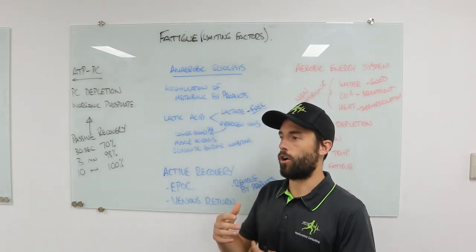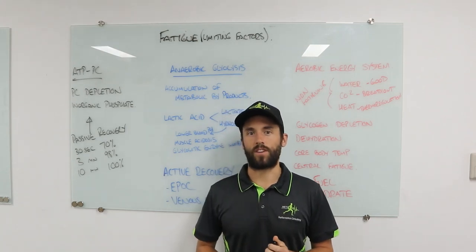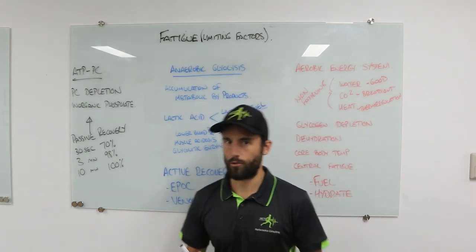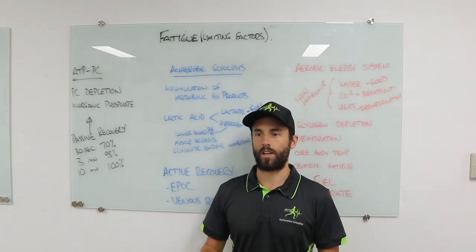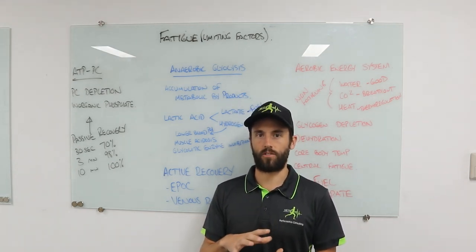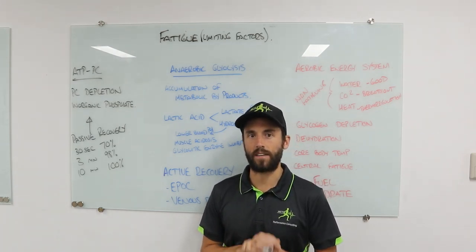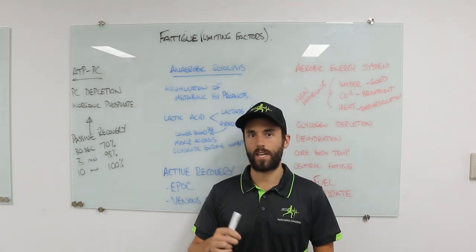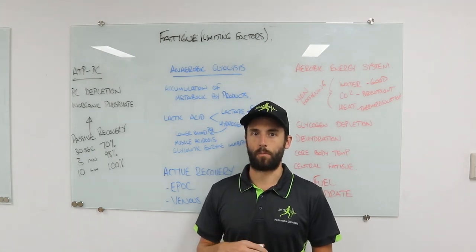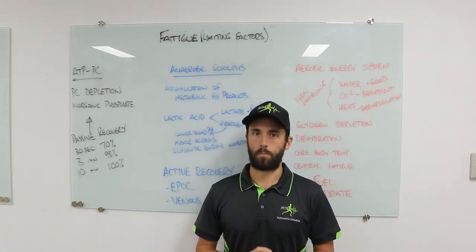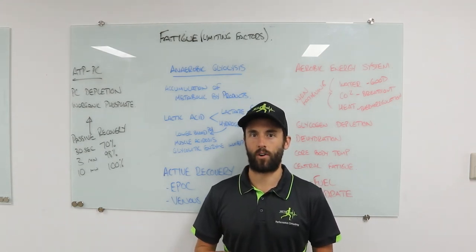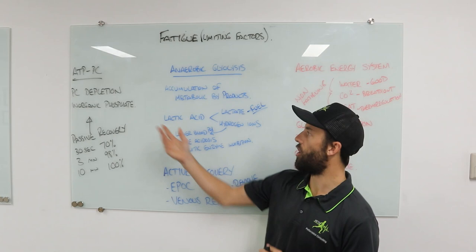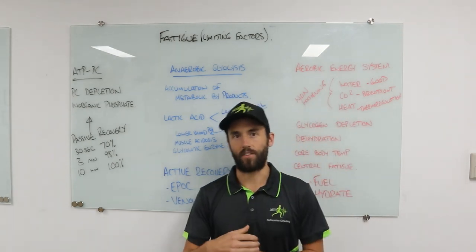The cause of fatigue depends on which energy systems we're using — the duration and intensity of events. In really short explosive events like the 100m sprint, 200m sprint, shot put, and javelin, where we have a lot of contribution from the ATP-PC system, our major cause of fatigue is PC depletion. We have a really small amount of PC stores — about 10 seconds — so once that depletes, we can't use the ATP-PC system as the dominant provider anymore. We don't feel tired when we run out of PC stores; we just can't perform at the same level.